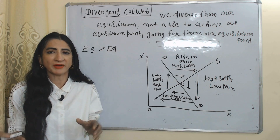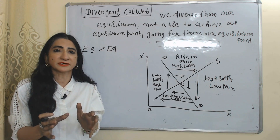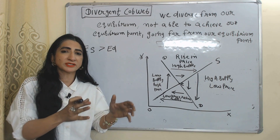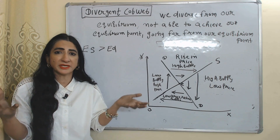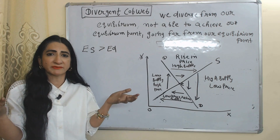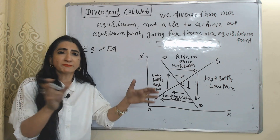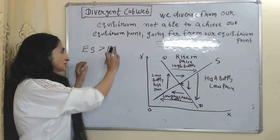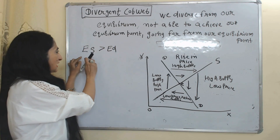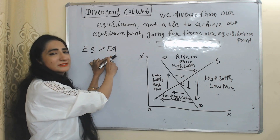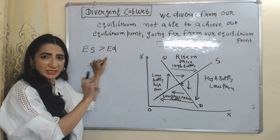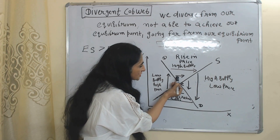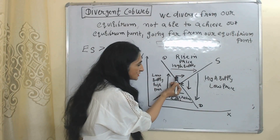Now we are going to talk about the divergent cobweb. In the case of a divergent cobweb, we diverge from our equilibrium point — we are not able to achieve our equilibrium point and instead move farther away from it. But why? Because in the case of a divergent cobweb, elasticity of supply is more than the elasticity of demand. That is why we are not able to achieve our equilibrium point.